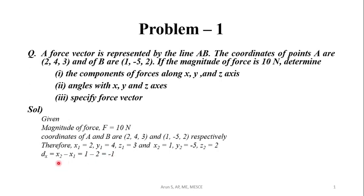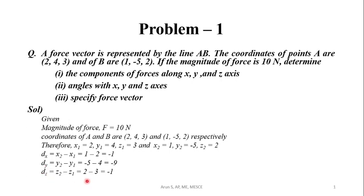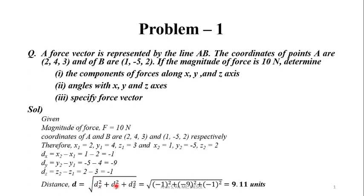Next, the distance between point A and B along the y axis, represented by dy, is given by y2 minus y1, that is minus 5 minus 4, giving minus 9. Similarly, dz equals z2 minus z1, giving 2 minus 3 equal to minus 1. Once we know dx, dy, and dz, the straight-line distance between A and B is d equals root of dx squared plus dy squared plus dz squared, giving d equals 9.11 units.